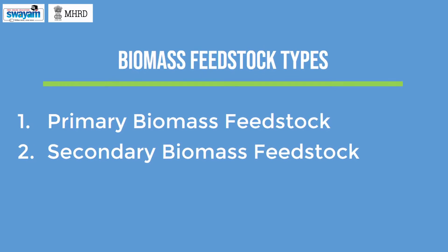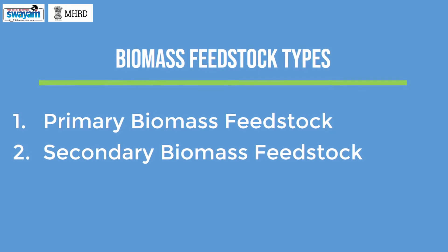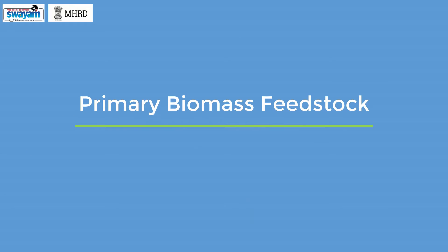The biomass feedstocks are of two types: primary biomass feedstock and secondary biomass feedstock. The primary biomass feedstocks are produced directly by photosynthesis, and hence are also referred to as primary production.